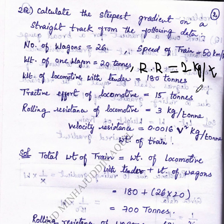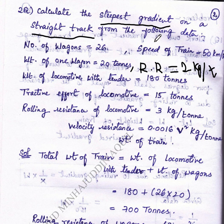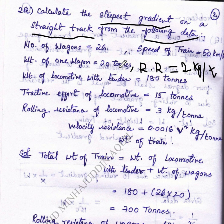Now we will discuss the next problem of railway engineering: the calculation of steepest gradient. We have to calculate the steepest gradient for a straight track from the following given data: number of wagons, speed of train in kilometers per hour, weight of one wagon in tons.